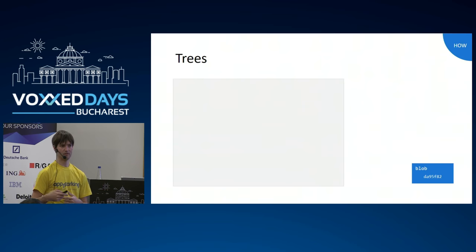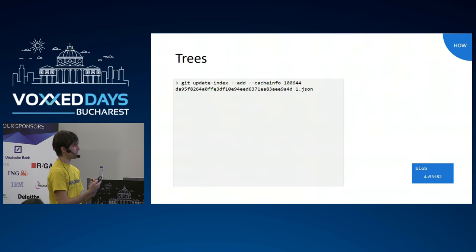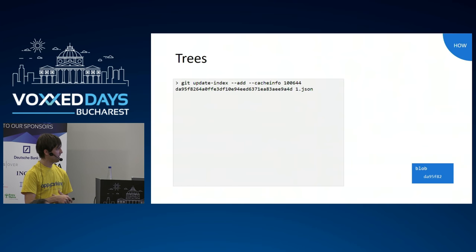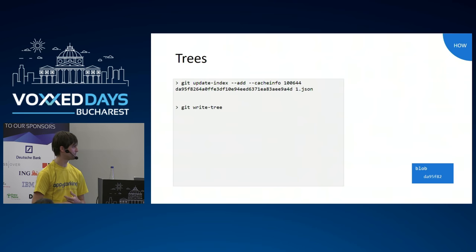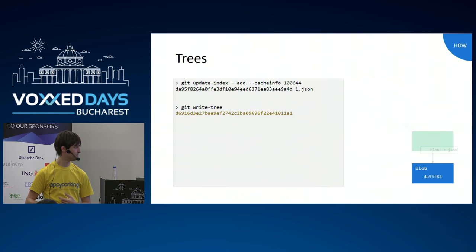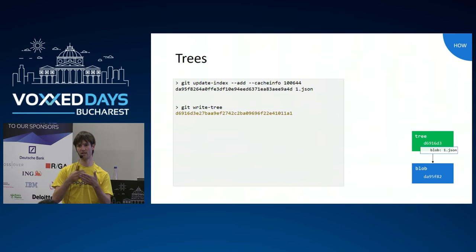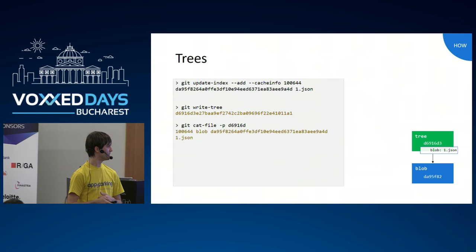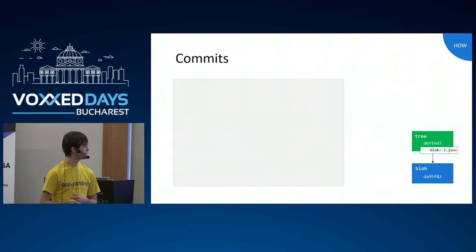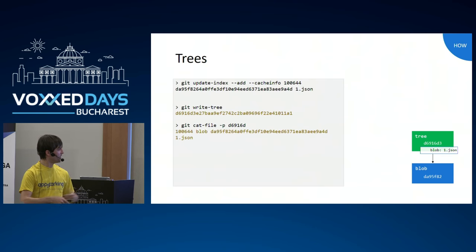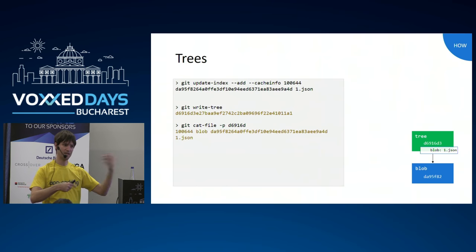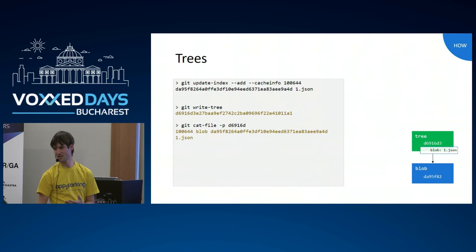To solve the changing-key problem, we need to go to the next level: trees. I tell Git to update an index, pass in the hash of the file, give it the filename 1.json, and then write that tree to the database. That gives me back a tree with a hash and a pointer to my blob. But when I change the file the hash changes, I need to change the tree, and I'm essentially in the same situation as before.